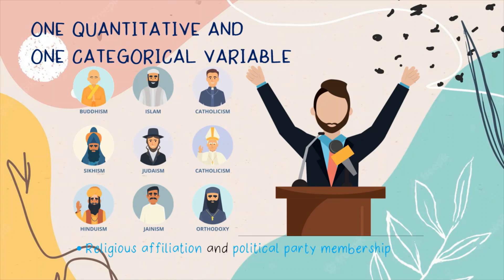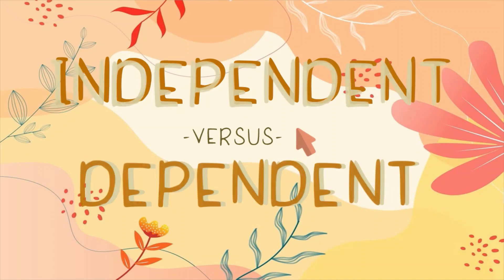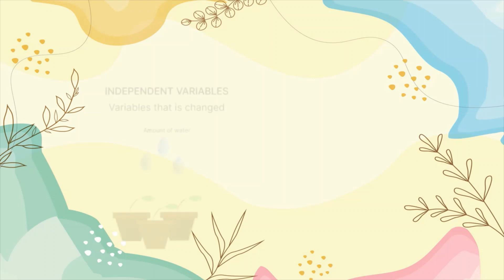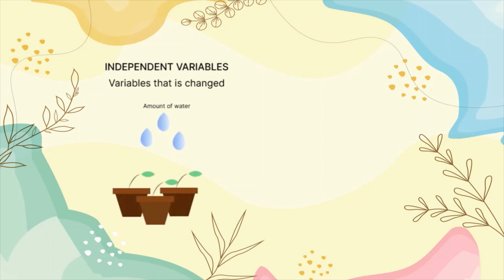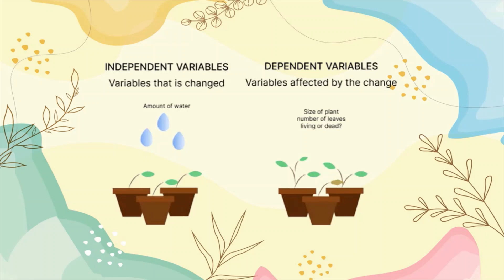We now understand quantitative and categorical variables. Let's now take a look at another way of classifying variables. A common and useful way to think about variables is to classify them as independent or dependent. Independent variables are those that the researcher chooses to study in order to assess their possible effects on one or more other variables. An independent variable is presumed to affect or somehow influence at least one other variable. The variable that the independent variable is presumed to affect is called a dependent variable. In common sense terms, the dependent variable depends on what the independent variable does to it and how it affects it.